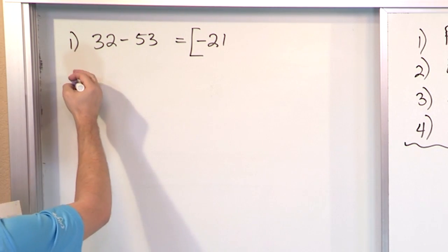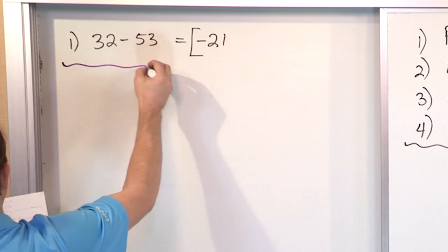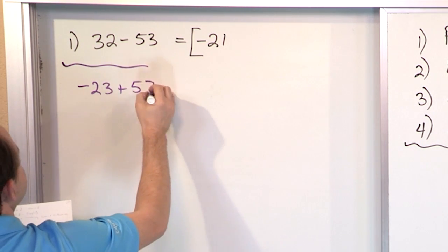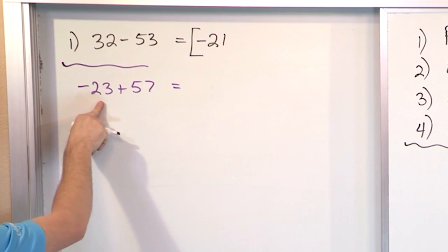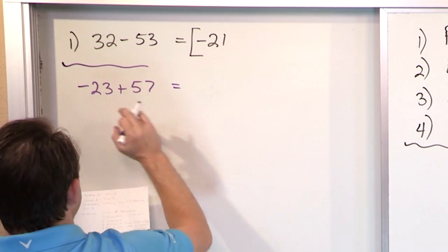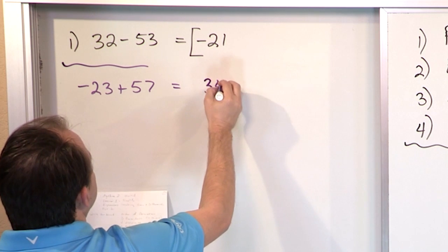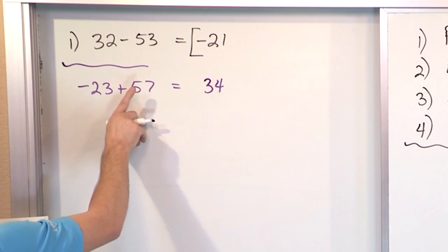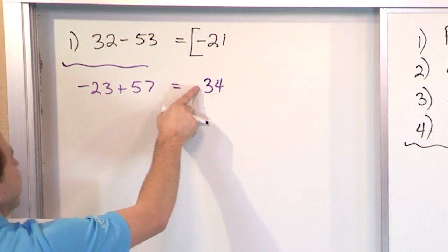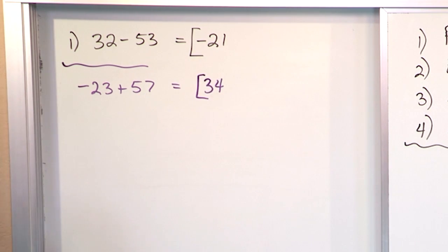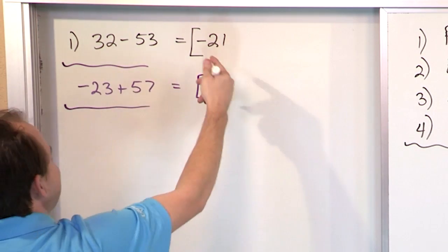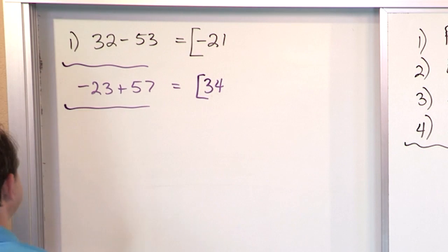What if we have negative 23 plus 57? Again, it's mixed signs, so I just subtract the numbers: 57 minus 23 is 34. The sign of the answer goes with the larger absolute value — in this case 57 is larger, so the answer is positive 34. When you have mixed signs, you just subtract, and the sign of the answer takes the sign of the bigger number.